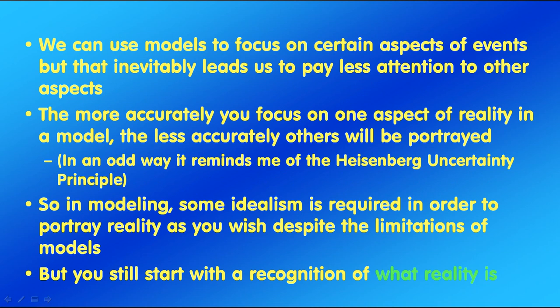We can use models to focus on certain aspects of events, but that inevitably leads us to pay less attention to other aspects. The more accurately you focus on one aspect of reality in a model, the less accurately others will be portrayed. In an odd way, it reminds me of the Heisenberg uncertainty principle, where when you measure something, you change it. So in modeling, some idealism is required in order to portray reality as you wish, despite the limitations of models.